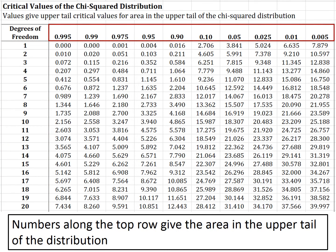The numbers in the top row give the area in the upper tail of the distribution. This is much different from the t-distribution. The t-distribution was symmetric, so we could negate values to get lower percentiles. In the chi-squared distribution, we need a set of columns for the upper percentiles as well as a set of columns for the lower percentiles.